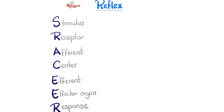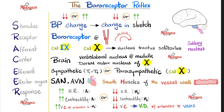The baroreceptor reflex, like any reflex, has the following components: stimulus, receptor, afferent, center, efferent, effector organ, and response — forming the acronym SARACSAR, which is Arabic for cockroaches. For the baroreceptor reflex, the stimulus is decreased or increased blood pressure. Decreased blood pressure causes less stretch in the baroreceptors — less stretch in the aortic arch and carotid sinus. Hypertension causes more stretch. The receptors are baroreceptors in the aortic arch and carotid sinus.